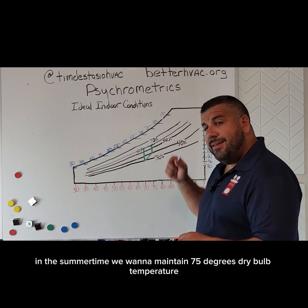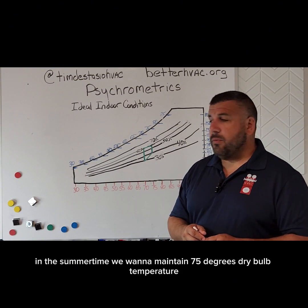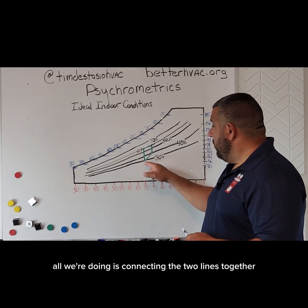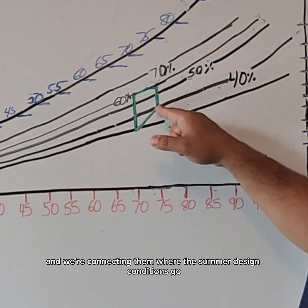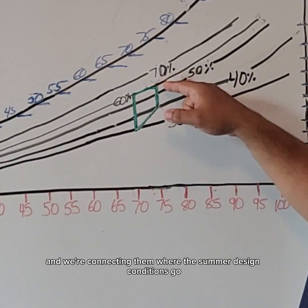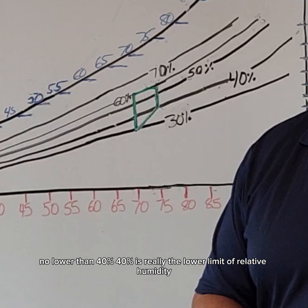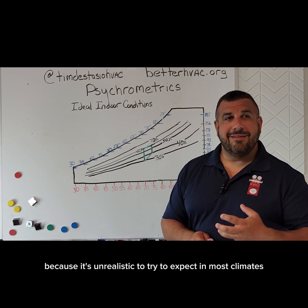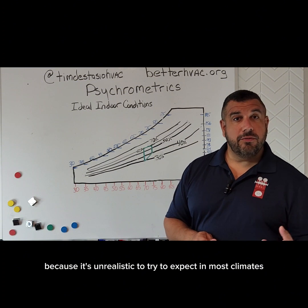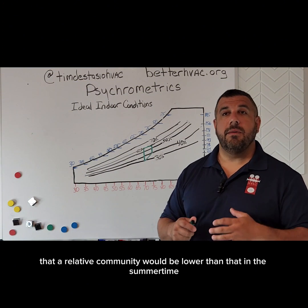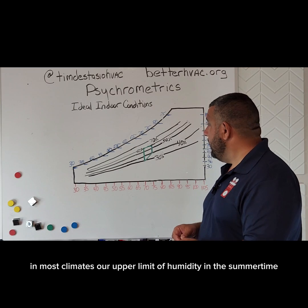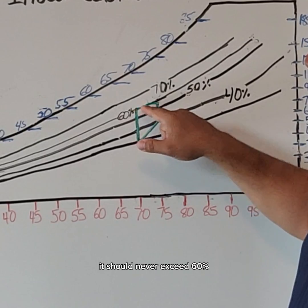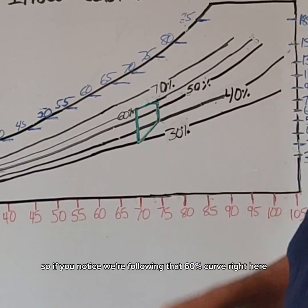In the summertime, we want to maintain 75 degrees dry bulb temperature — that's where we see this other vertical line here. At the bottom, all we're doing is connecting the two lines together, connecting them where the summer design conditions go no lower than 40%. 40% is really the lower limit of relative humidity, because it's unrealistic to expect in most climates that relative humidity would be lower than that in the summertime. Our upper limit of humidity in the summertime should never exceed 60%, so we're following that 60% curve right here.